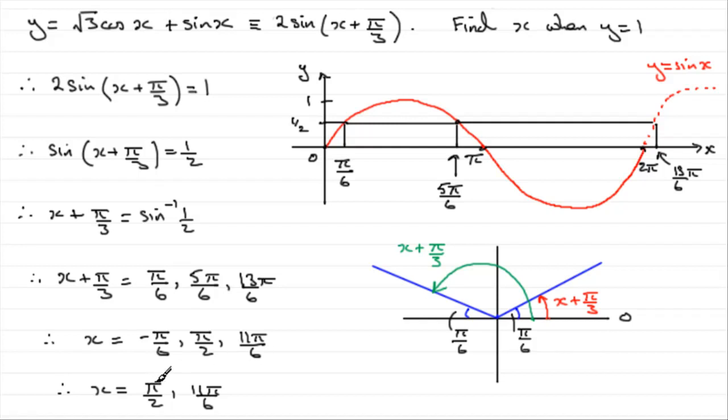But there you go. There's our answers. X equals pi upon 2, 11 pi upon 6 at the end of the day. And so that brings us now to the end of this question.